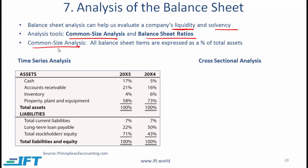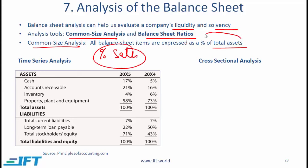With common size analysis, all balance sheet items are expressed as a percentage of total assets — unlike the income statement, where all items were expressed as a percentage of sales. What you are looking at here is a time series analysis. For example, cash at 17% means that for the year ending 2005, the cash amount is 17% of total assets, and accounts receivable is 21% of total assets.